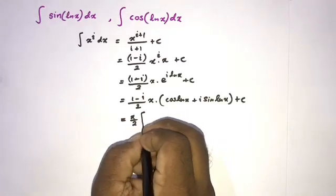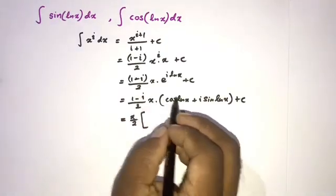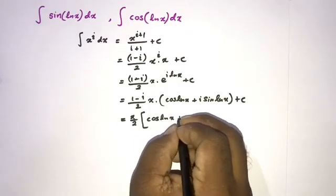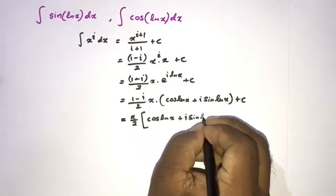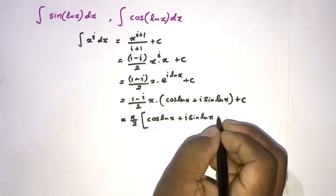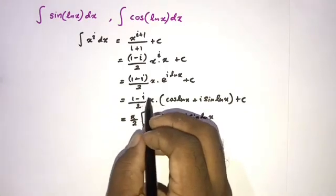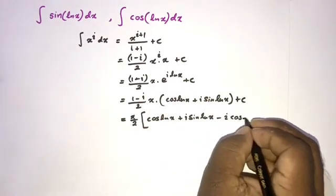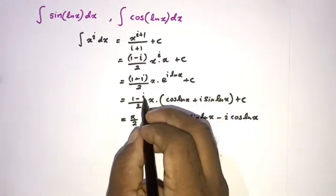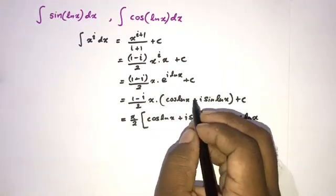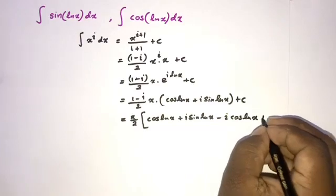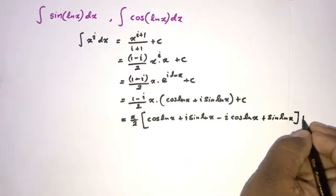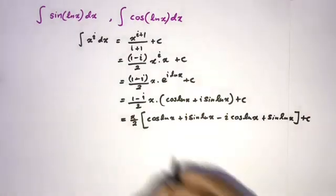Now we rearrange: x over 2 times, multiplying by 1 gives cosine of natural log of x plus i times sine of natural log of x. Then multiplying by minus i gives: minus i times cosine of natural log of x, and minus i times i equals minus i² equals plus 1, so plus sine of natural log of x, plus c.